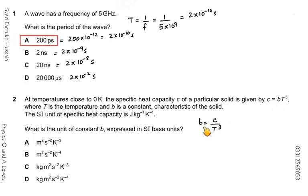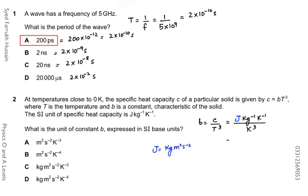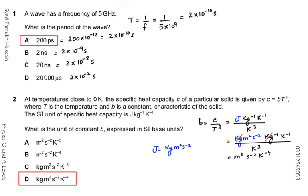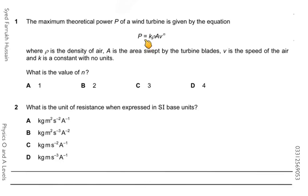After making b the subject, substitute the variables with their units: c is joule per kilogram per kelvin, divided by kelvin cubed. Since joule is an SI unit but not an SI base unit, replace joule with kg·m²·s⁻². This gives kg·m²·s⁻² × kg⁻¹ × K⁻¹ divided by K³. After simplification, the SI base units of b are m²·s⁻²·K⁻⁴, so the answer is D.